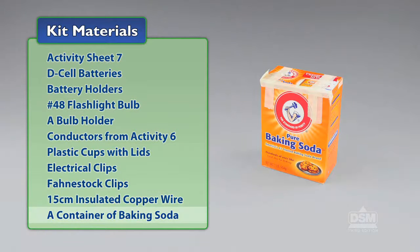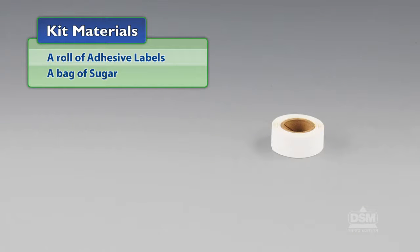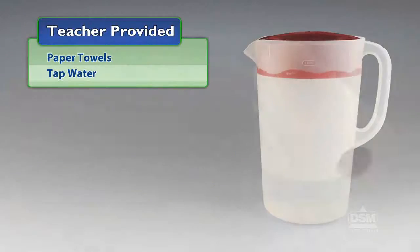You will need a container of baking soda, a roll of adhesive labels, and a bag of sugar. You will also need to provide paper towels and tap water.